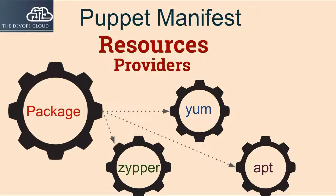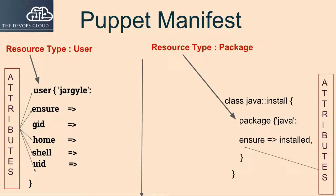Resource providers implement the same resource type on different kinds of systems, usually by calling out to external commands. Although Puppet will automatically select an appropriate default provider, you can override the default with the provider attribute. For example, a SUSE Linux server will get the Zypper provider, Red Hat systems will get the yum provider, and Ubuntu systems will get the apt provider. So the package name will remain the same but the provider will help to install that package on different systems. Providers are platform-specific procedures.